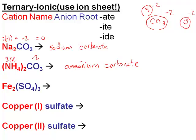Now we're going to step one step further into what happens when you have a metal like iron — a transition metal. In this case, the formula is Fe2(SO4)3. To name this, we look up Fe on the periodic table and that stands for iron. So the first thing you can do is write down the cation name: iron. The next thing we need to do is look at SO4. Does anyone know what that is from the ion sheet? Sulfate. So it's iron sulfate.